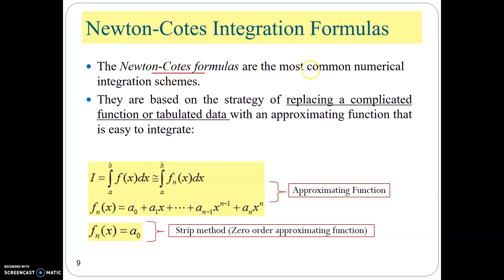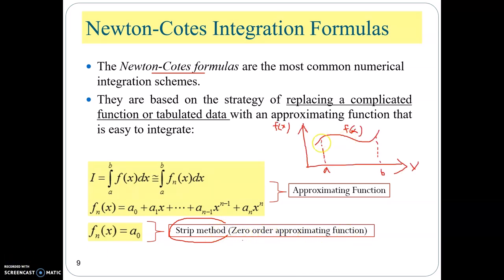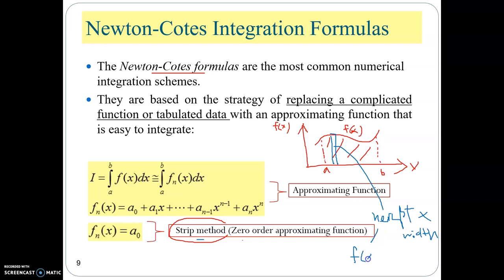Newton-Cotes formulas are the most common numerical integration scheme. You have learned the strip method previously, which is one of the Newton-Cotes formulas. The strip method is also called the zero order approximating function. If you want to integrate a function f(x) from a to b to find the area within this region, the strip method approximates the area by assuming it to be a rectangular bar. The area equals the height multiplied with the width, where the height is f(x) at a particular segment and the width is delta x, the step size.